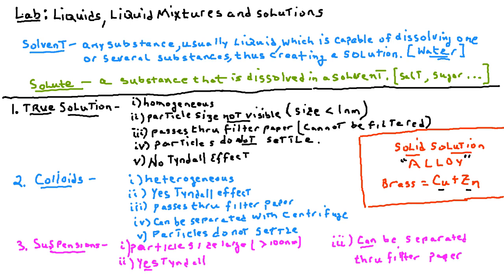If the particle size gets slightly larger than in a true solution, we call those colloids. There is a Tyndall effect in colloids. Colloids are heterogeneous, meaning the solute particles are not distributed equally. Colloidal particles are small enough to pass through filter paper, so you cannot separate them that way. However, you can separate them with a centrifuge. In a colloid, the particles do not settle.